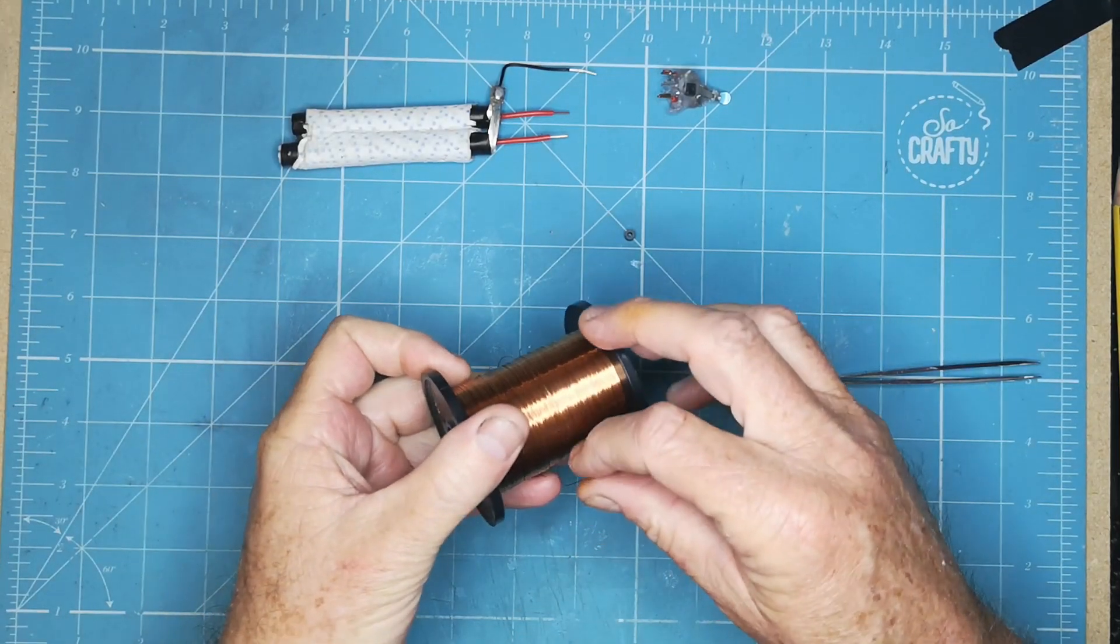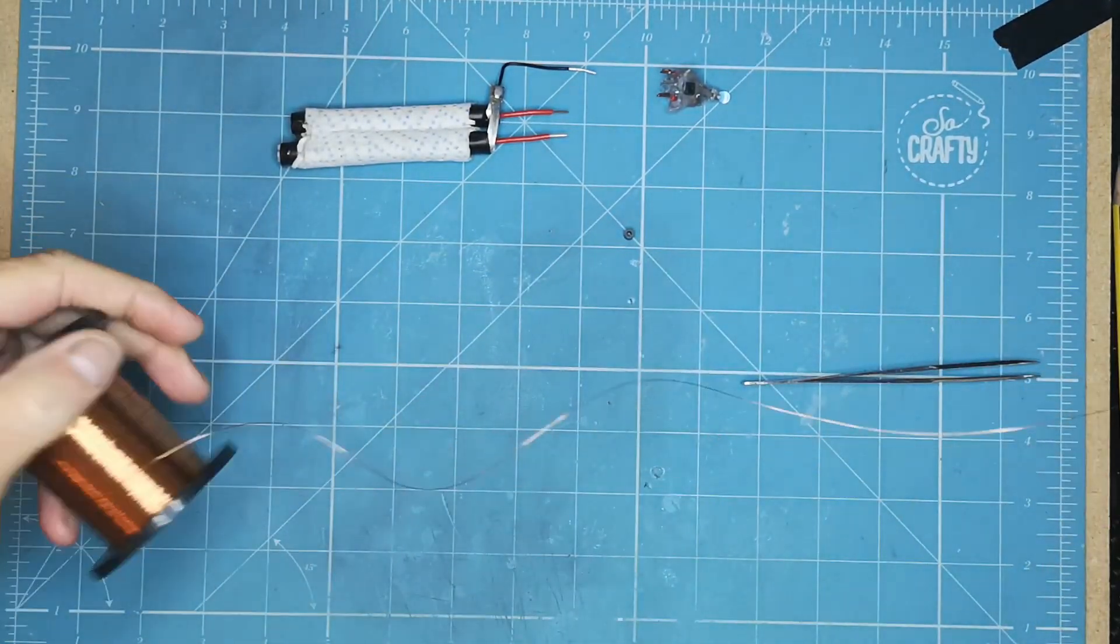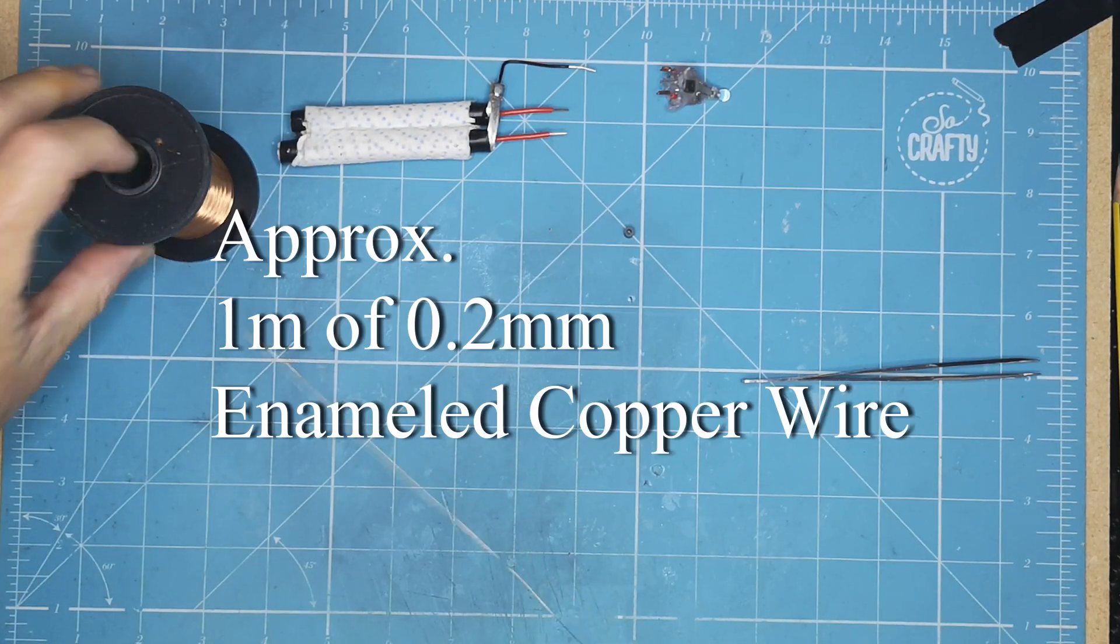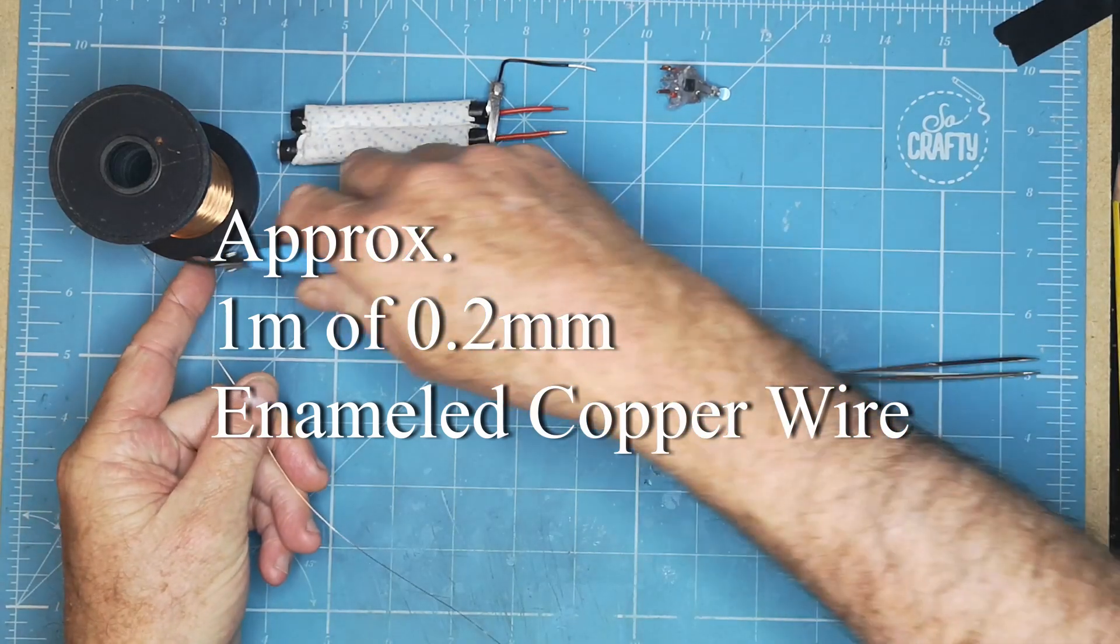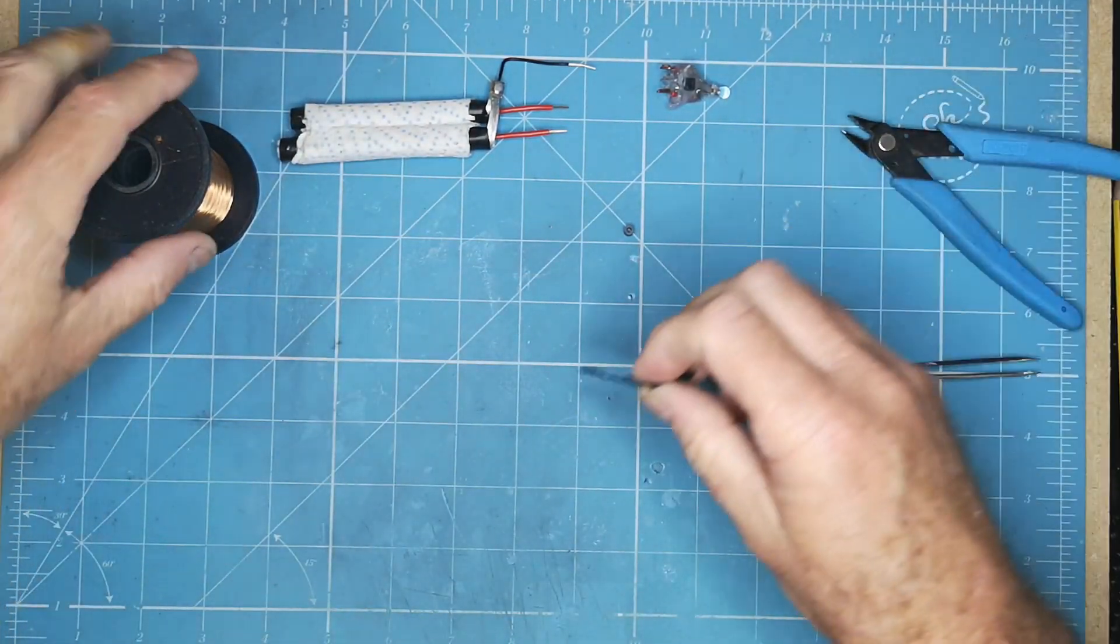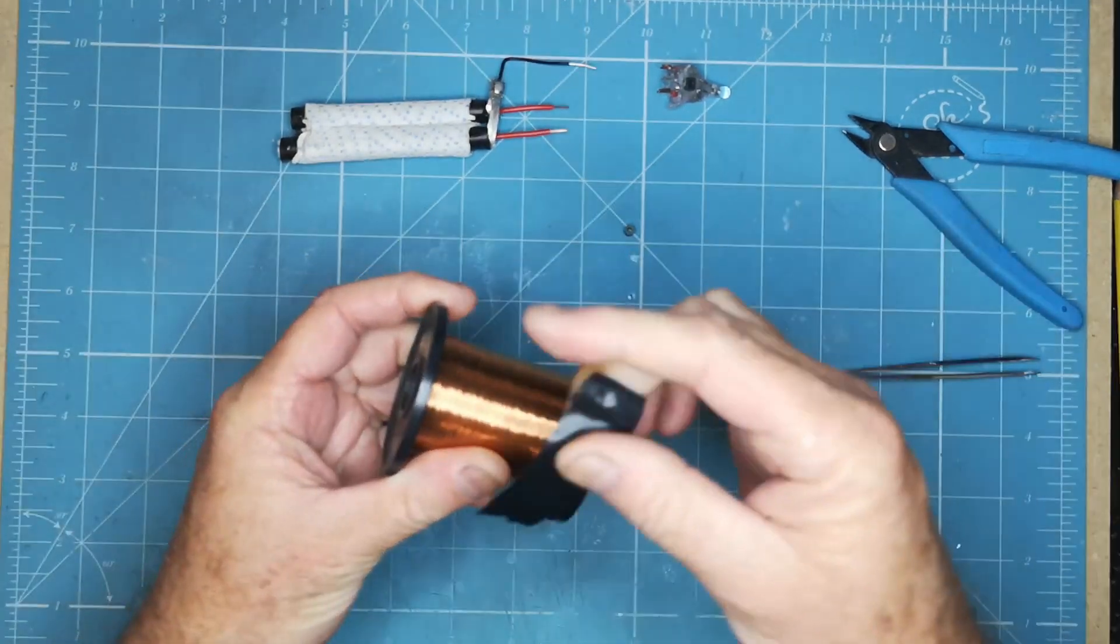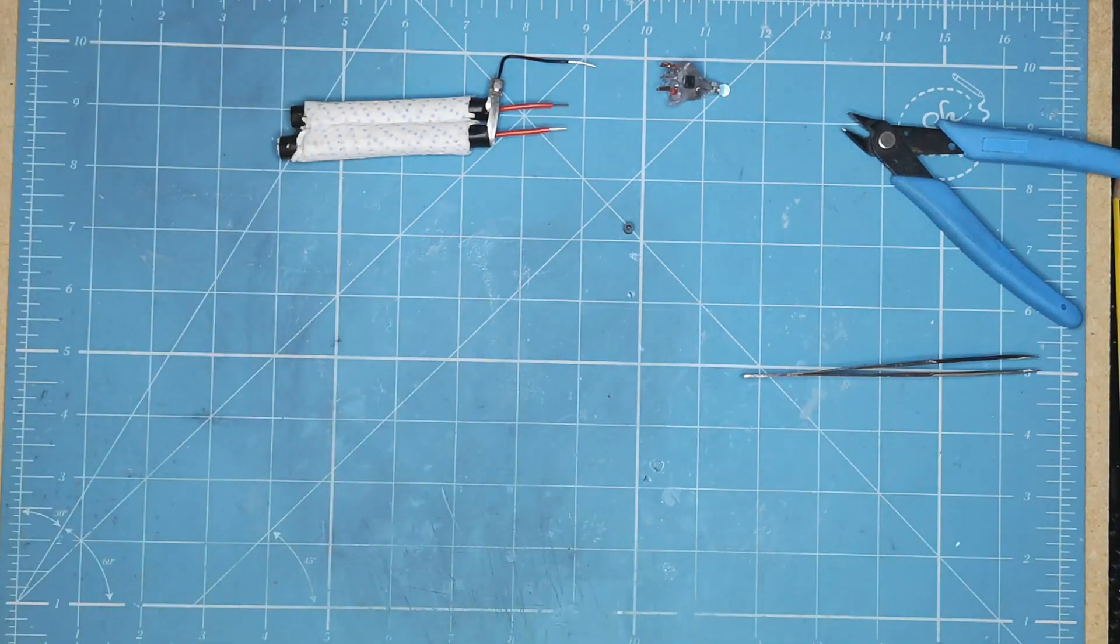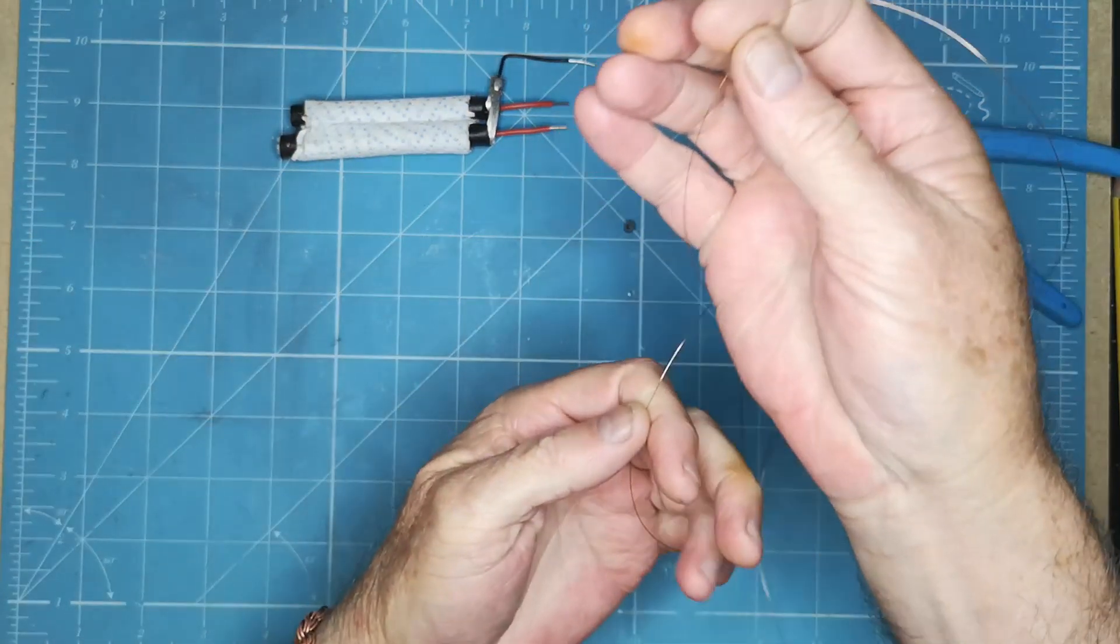Okay, so now we will need a length of copper wire. That might just be enough. And we will tape the strand so that it doesn't unwind. There's our copper wire.